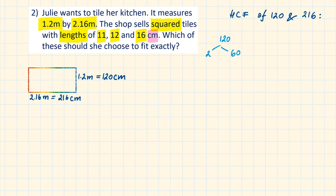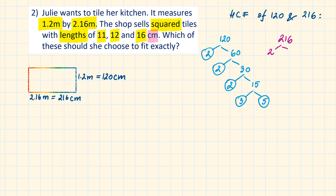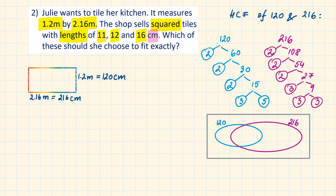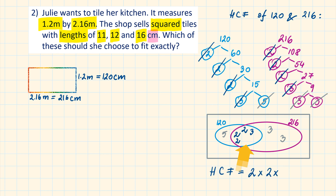For 120, the branches are: 2 and 60; then 2 and 30; then 2 and 15; and finally 3 and 5. For 216, the branches are: 2 and 108; 2 and 54; 2 and 27; 3 and 9; and 3 and 3. The HCF is the intersection of the Venn diagram, which is 2 × 2 × 2 × 3, equal to 24.